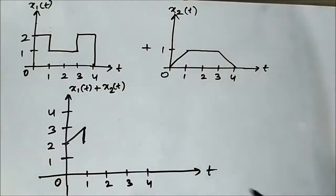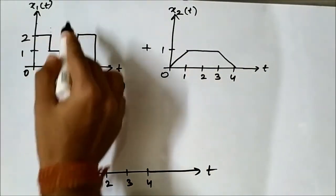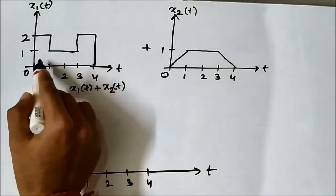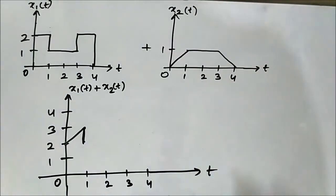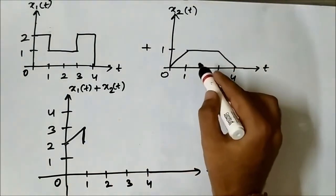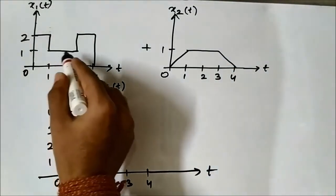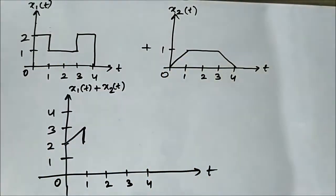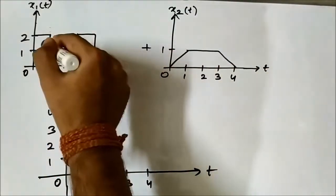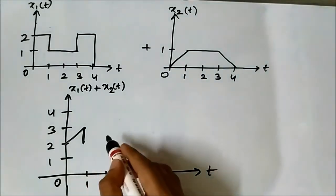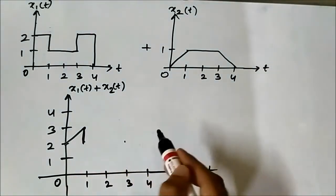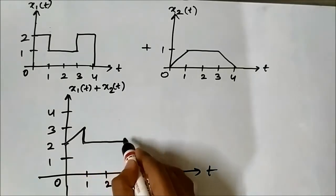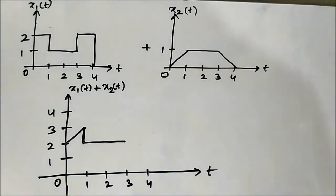For the entire duration from t equals 1 to t equals 3, the signal values are constant in both cases. x1(t) is 1 and x2(t) is also 1 throughout this interval. So the sum is 1 plus 1 equals 2 from t equals 1 to t equals 3.